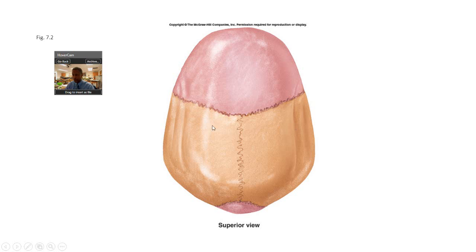What are we looking at? We're looking at a superior view. You can identify a bone here, a bone here, a bone here, and one here. This would be your frontal bone, your parietal bones, and your occipital bone.